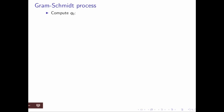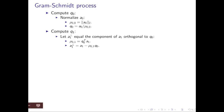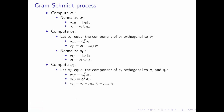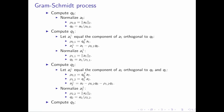To compute q0, you take a0 and simply normalize it to have length 1. To compute q1, you take a1 and compute the component orthogonal to q0, then normalize it to be of length 1. To compute q2, you compute the component orthogonal to q0 and q1, and then normalize it. And if you wanted to compute q3, q4, q5, you simply keep going that way.